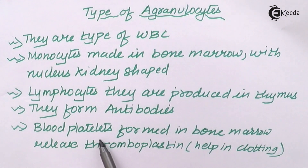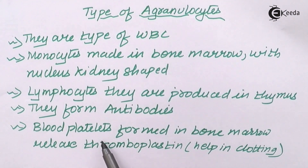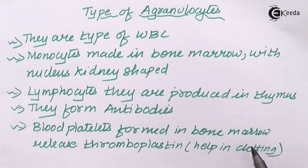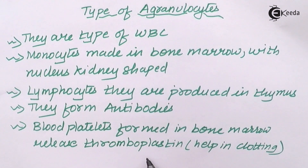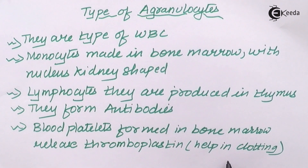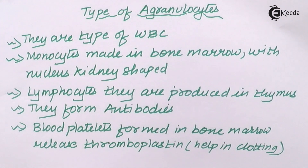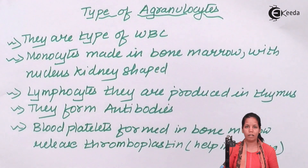Blood platelets are formed in the bone marrow region and they release thromboplastin. Thromboplastin is a very crucial component of blood clotting. Imagine a condition in which thromboplastin is produced in greater quantity — the clotting mechanism in your body would be accelerated without a cut, and that would lead to terrible conditions. Blood platelets increase or decrease is very fatal to life.